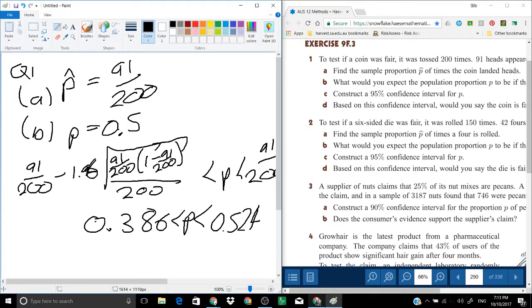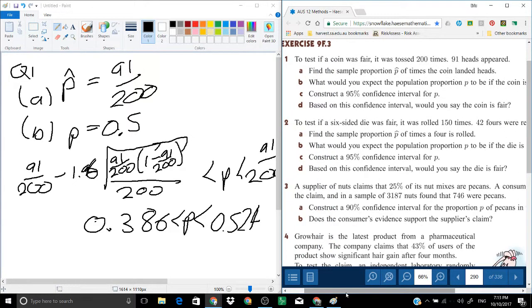The boundaries are 0.386 and 0.524. That's our confidence interval. Now, based on this confidence interval, would you say the coin is fair? Interesting that 0.5 - the predicted value is not outside the confidence interval.